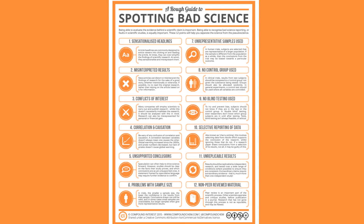Sometimes the results can look like they're pointing one direction but really aren't when you look more closely. Conflicts of interest is huge — for instance, in the 1950s, cigarette companies were paying for scientific studies that concluded cigarettes either were not bad for you or possibly were good for you. We've already looked at correlation and causation, and unsupported conclusions, where the data just don't support the point being made.